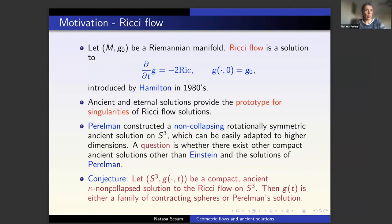Perelman posed the question of whether there exist any other compact ancient solutions besides these and the round spheres. His conjecture was that if (S^3, g(t)) is a compact ancient kappa-non-collapsed solution to the Ricci flow on S^3, then the only possibilities are the Perelman solution or the round spheres. Our original goal was to prove this conjecture — we first worked on curve shortening flow, then mean curvature flow, and finally tried to prove it for the Ricci flow.